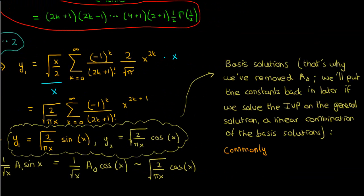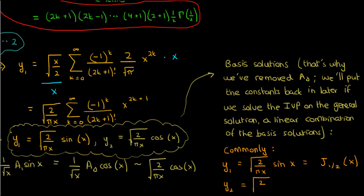Both solutions are linearly independent — they're not multiples of each other — so they serve as basis solutions to Bessel's equation for half integer order. It's common practice to write y1 as J sub 1/2 of x and y2 as J sub negative 1/2 of x. Note there is an easier way to derive these by differentiating J sub 1/2, but the longer Frobenius method approach was used here because it's good practice for cases where the roots of the indicial equation differ by an integer, and because the derivative and integral formulas for Bessel functions haven't been derived yet.